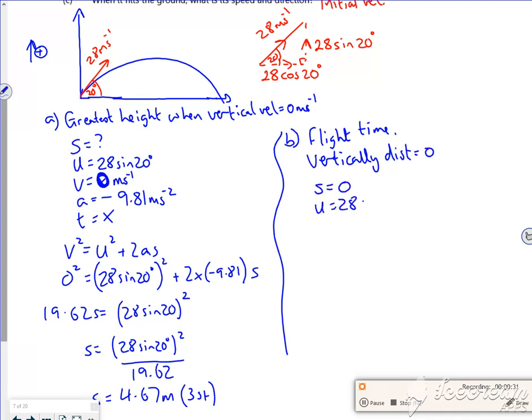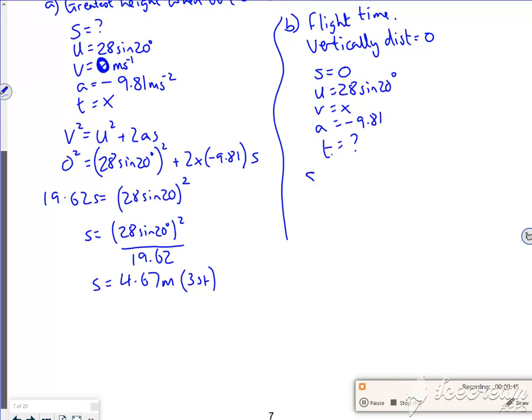U we said was 28 sine 20. V, not fussed about. A is minus 9.81. T is question mark. So the one thing without V is S equals UT plus a half AT squared.